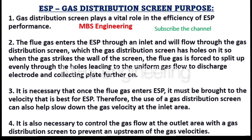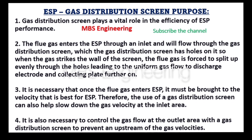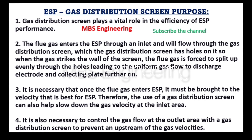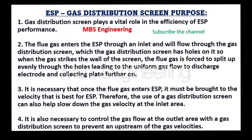Now we understand the purpose of the gas distribution screen in the electrostatic precipitator. Point 1: The gas distribution screen plays a vital role in the efficiency of ESP performance. Point 2: The flue gas enters the ESP through an inlet and will flow through the gas distribution screen, which has holes on it. When the gas strikes the wall of the screen, the flue gas is forced to split up evenly through the holes, leading to uniform gas flow to the discharge electrode and collecting plate further on.